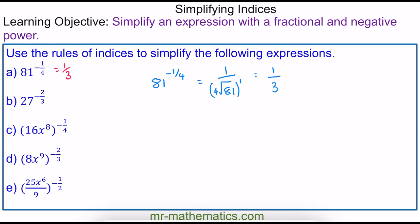Do you want to try and simplify 27 raised to the power of negative 2 thirds? You can pause the video and resume it when you're ready. So 27 is our base, we have negative 2 thirds as our power. The negative means this is 1 over, and this is the cube root because our denominator is 3, raised to the power of 2. The cube root of 27 is 3, and 3 squared is 9. So this becomes 1 ninth.